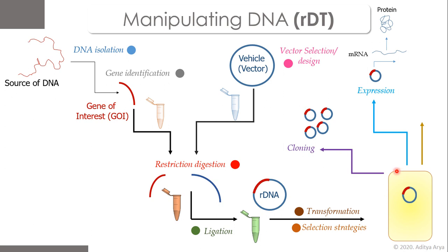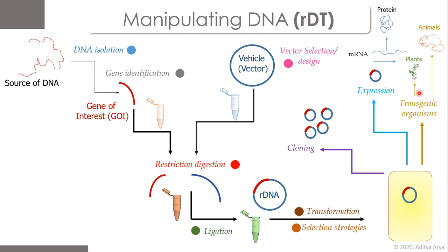The third important application is the creation of transgenic organisms. By performing the same transformation process into a eukaryotic cell and developing that cell into a complete organism, we can create a recombinant organism. Both transgenic plants and animals have been developed and commercialized using this strategy.